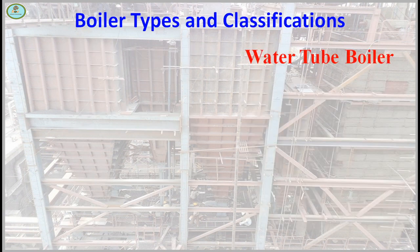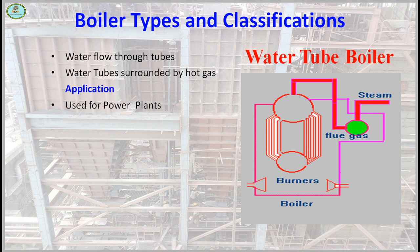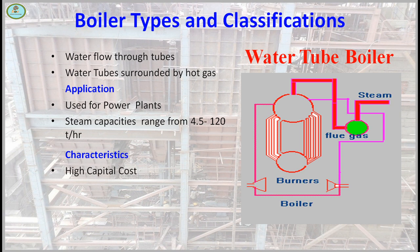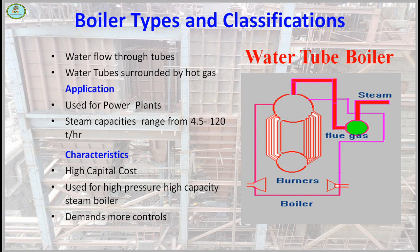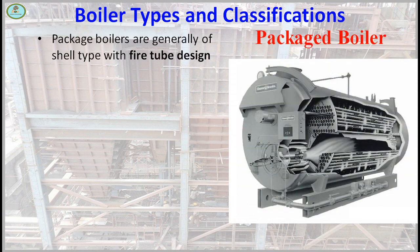Water tube boiler: in a water tube boiler, water flows through tubes and the tubes are surrounded by hot gases. Water tube boilers are used for power plants with steam capacity ranging from 4.5 to 120 tons per hour. Characteristics include high capital cost, used for high pressure and high capacity steam demand, and requires more controls and very stringent water quality.